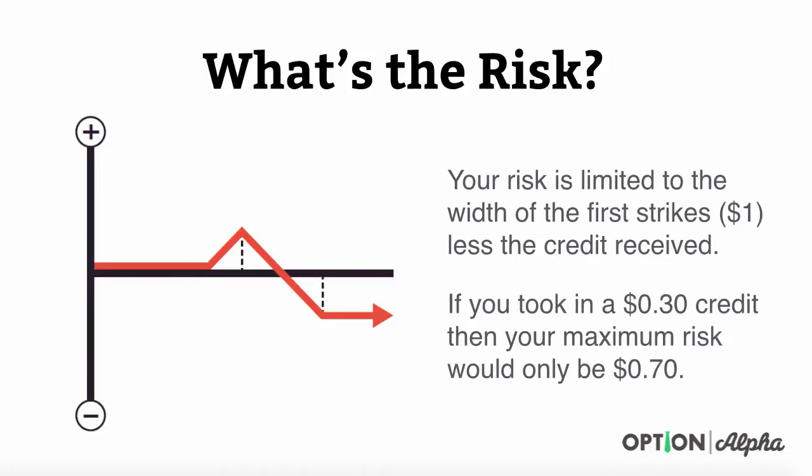What's the risk? Your risk is limited to the width of the first strikes. In most cases we do these $1 wide, less the credit that you received. If you took in a $30 credit, then your maximum risk would be $70 in this case if the width of the first strikes is $1.